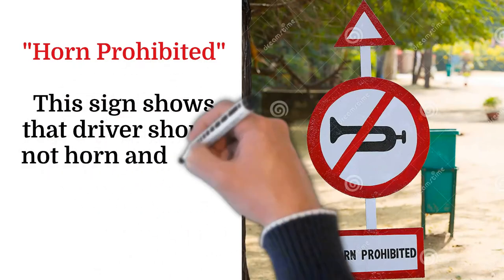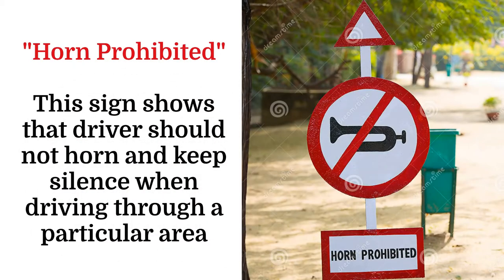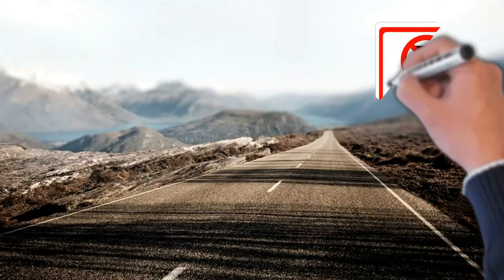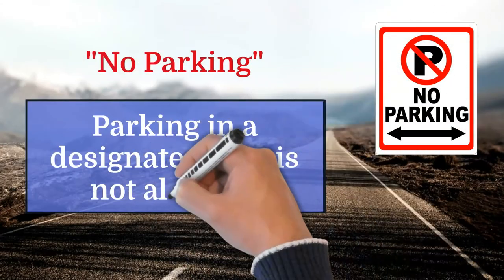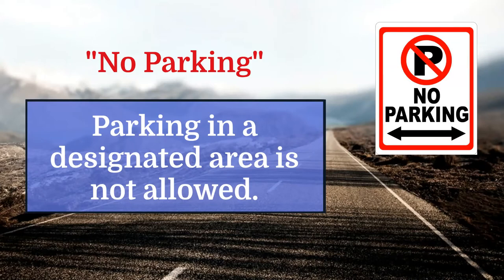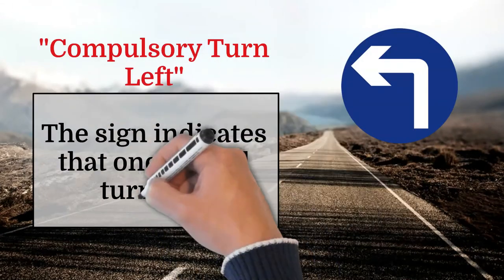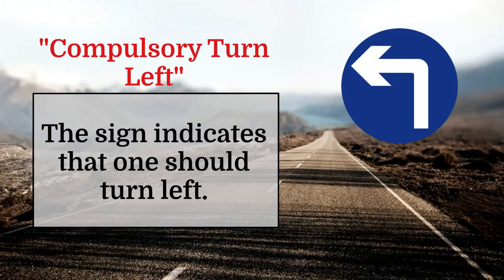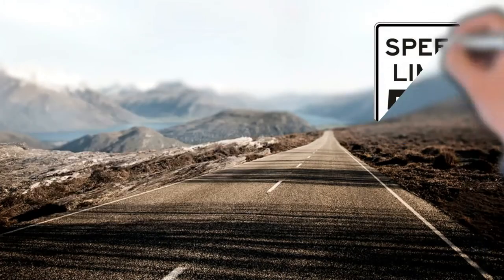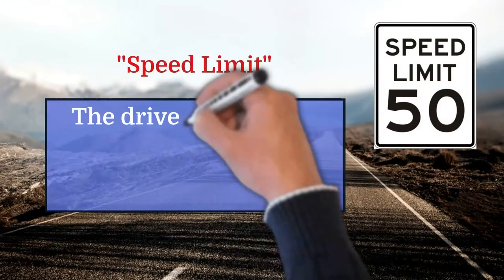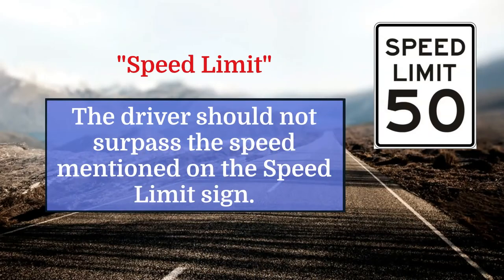Horn prohibited: this sign shows that the driver should not horn and keep silence when driving through a particular area. No parking: means parking in a designated area is not allowed. Compulsory turn left: the sign indicates that one should turn left. Speed limit: the driver should not surpass the speed mentioned on the speed limit sign.